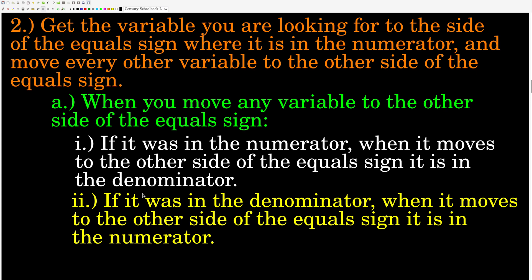If the variable you're asked to find is already in the top on one side, leave it there and just move everything else over. But if the variable that you are looking for is in the bottom — in the denominator — then what you do is move it to the other side of the equal sign, because that puts it in the top. Then move everything that's on the same side back over to the other side, so that what you're looking for is always in the numerator and by itself. When you cross the equal sign, everything flips: top to bottom, bottom to top.